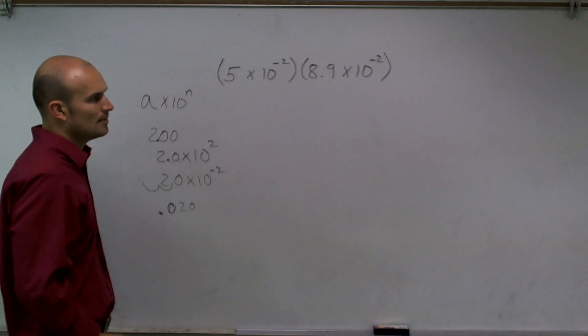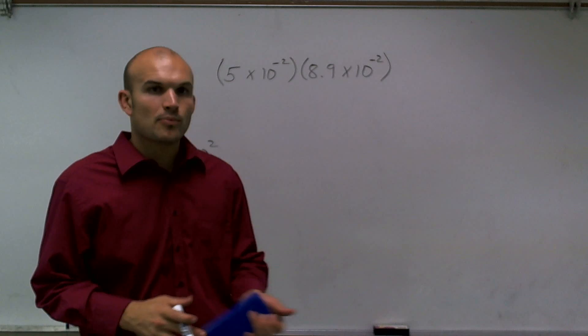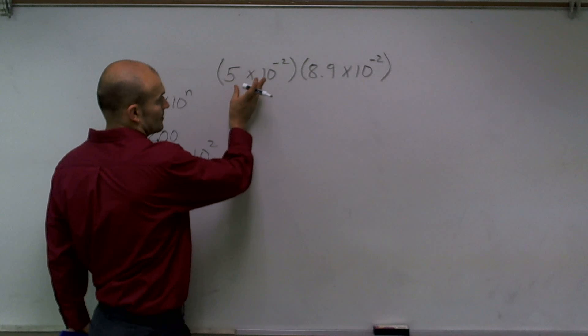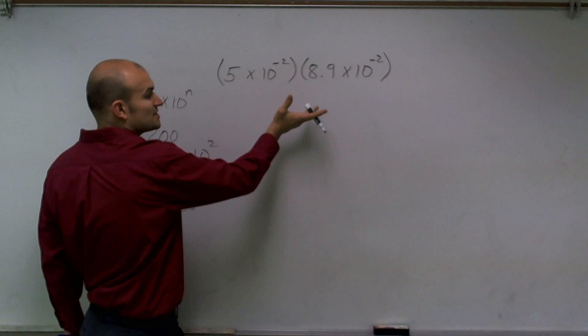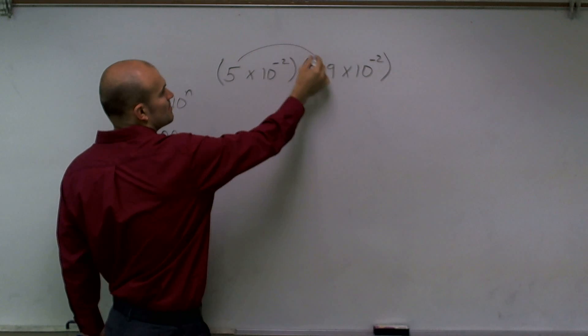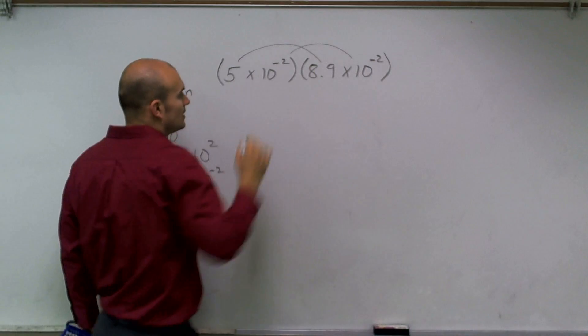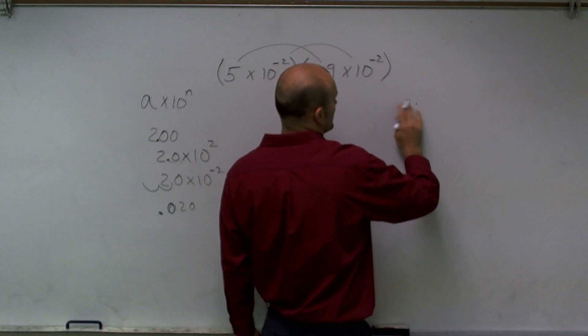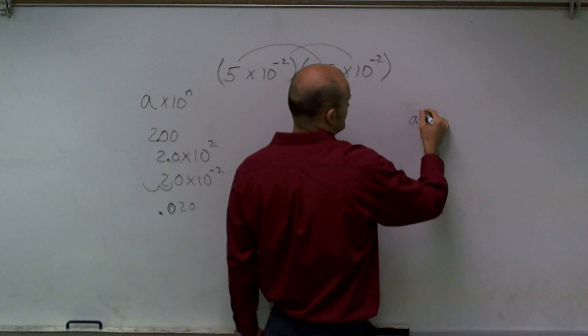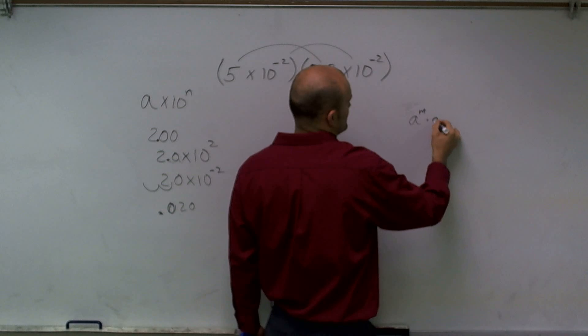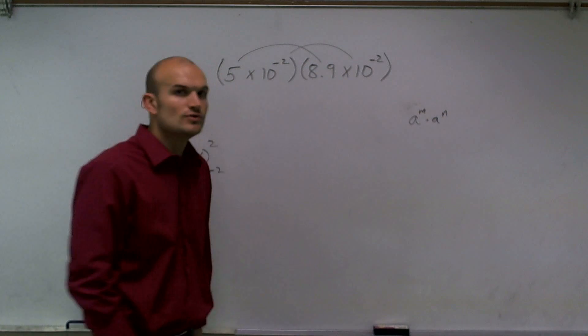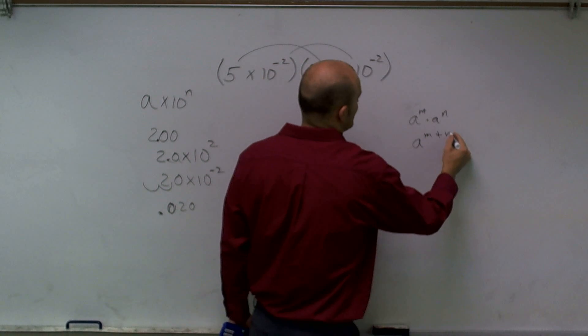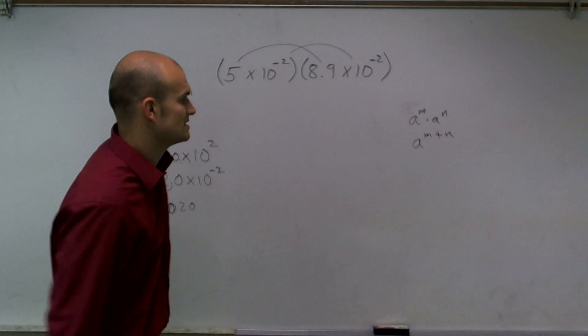Now, the important thing when we have operations of scientific notation: with multiplication, we multiply our two numbers and then multiply our bases. The next important thing is when you have a to the m times a to the n—whenever you have two numbers with the same base but different exponents—we add the exponents and keep the base the same.